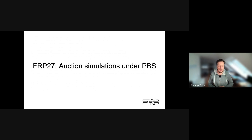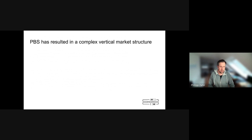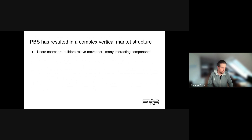FRP 27 goes in a different direction. It also uses open games as a tool, but it's focused on the question of auction simulations under proposal-builder separation. PBS has resulted in a very complex vertical market structure. There are many players — users, searchers, builders, relays, map boosts — many interacting components that are also changing. It's not static; many new players come into the market with new services, so it's an ever-evolving landscape.